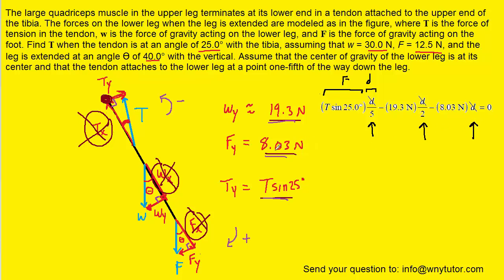So note that the 8.03 newtons, the fy, is located at the very end of the tibia. So that means the distance from that force to the pivot is the full length of the tibia, and we've called that d.